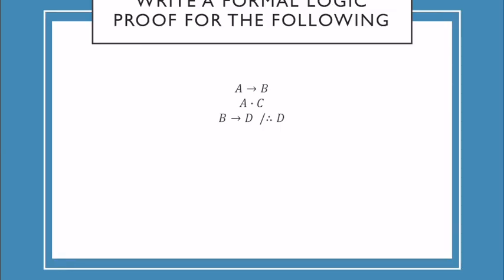Let's write another formal logic proof. I have A implies B, A and C, and B implies D, and I'm trying to get D all by itself. Where is my only D in this problem? It's right here, I have B implies D. So I need to try and get B by itself because then I could use modus ponens. My first step, I've got A and C, I'm going to simplify that to just A because that's the only move I can make right now.